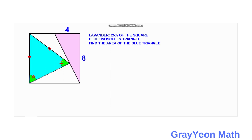Welcome to GRIOM. If you are asked to solve this problem, we have a square and inside the square a lavender area that is 25 percent of the square. It has the dimensions 4 and 8, and we are required to find the shaded area.